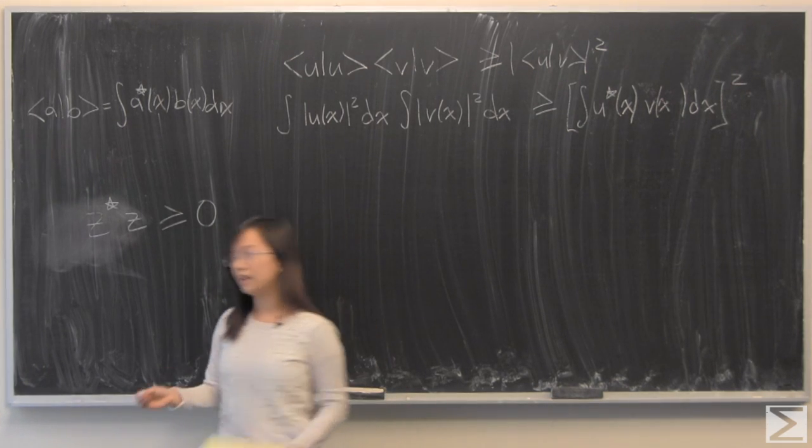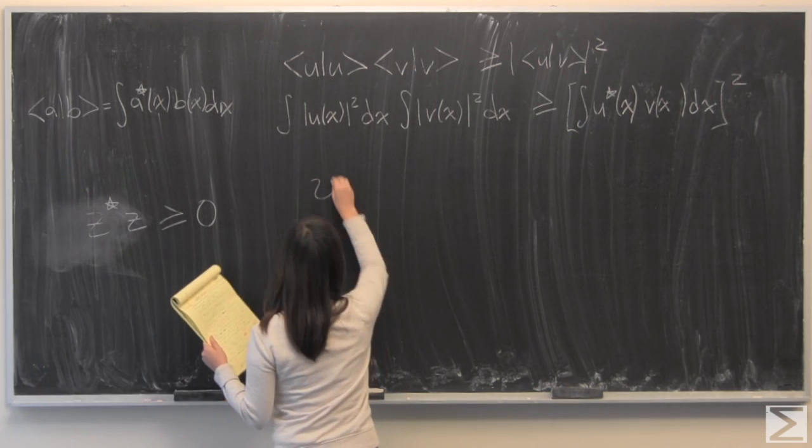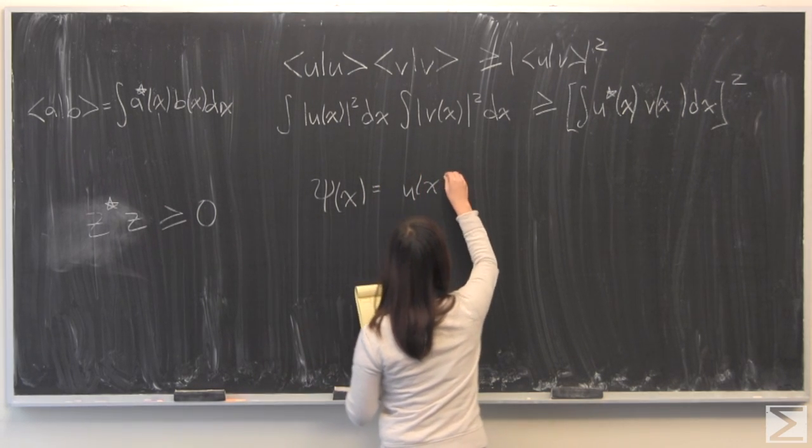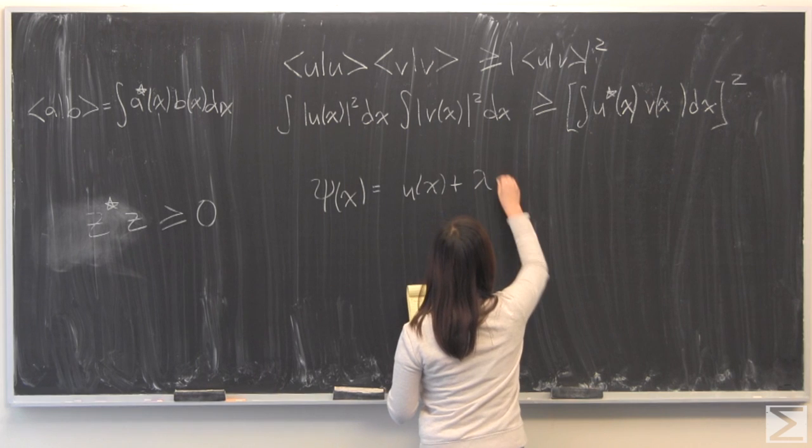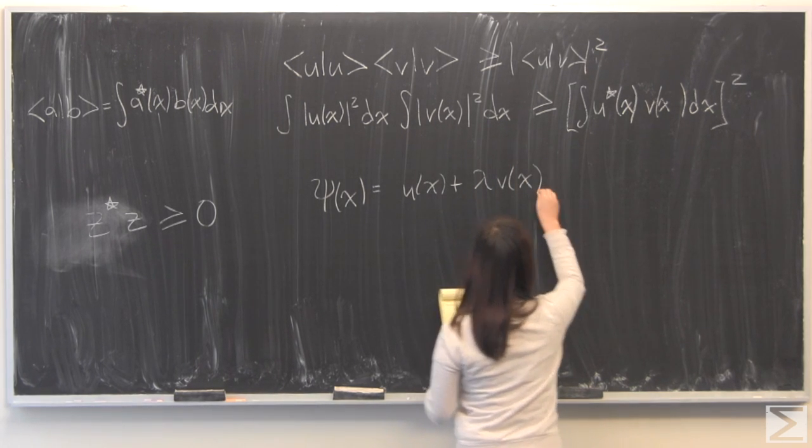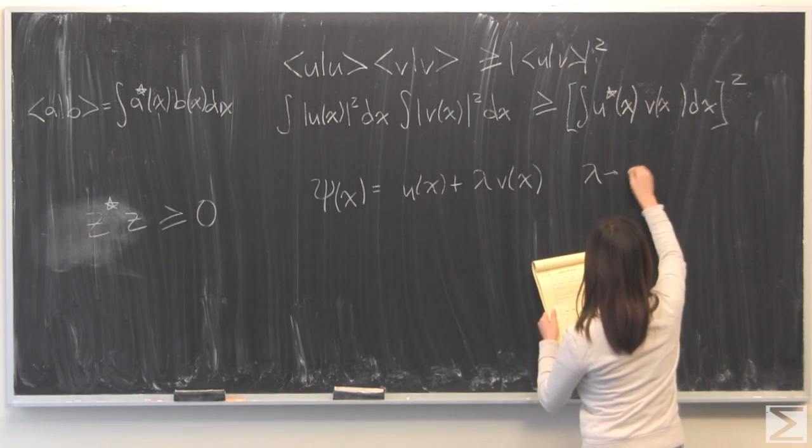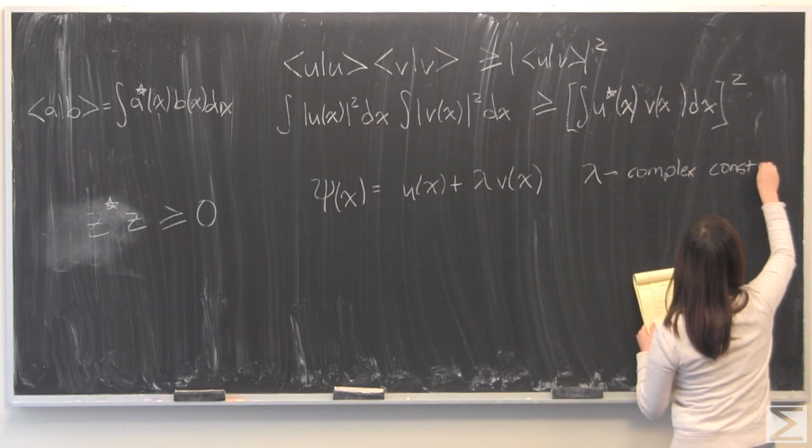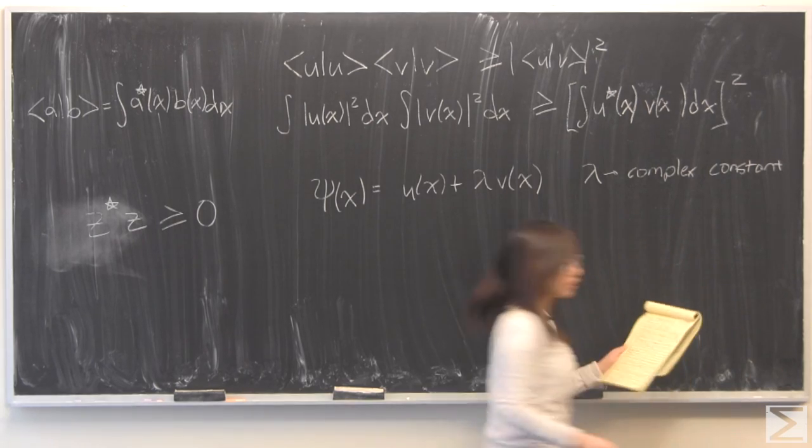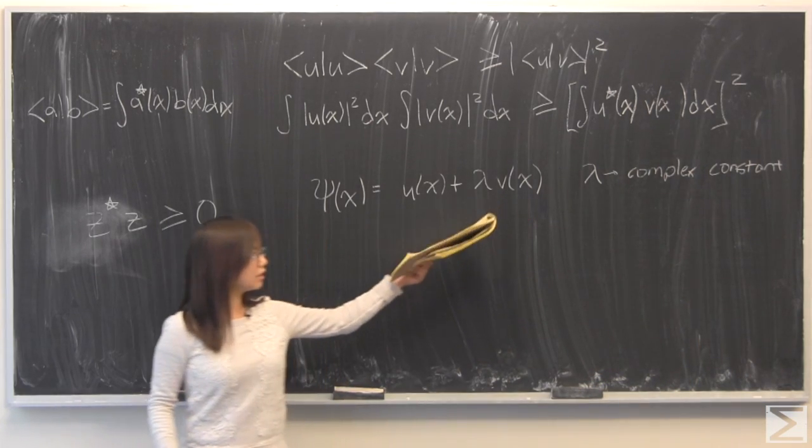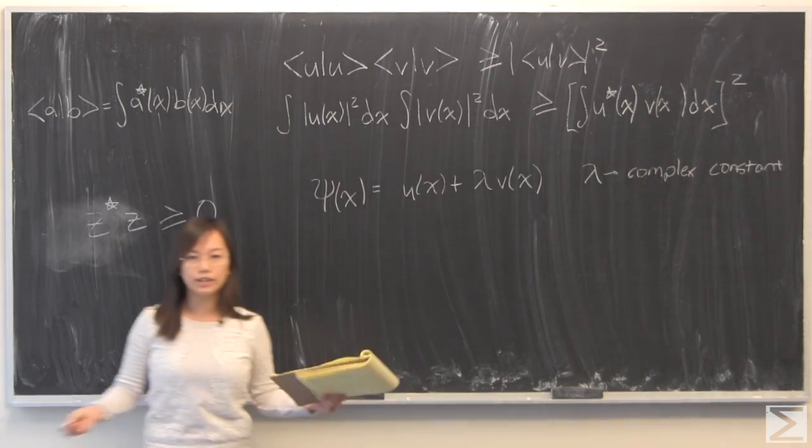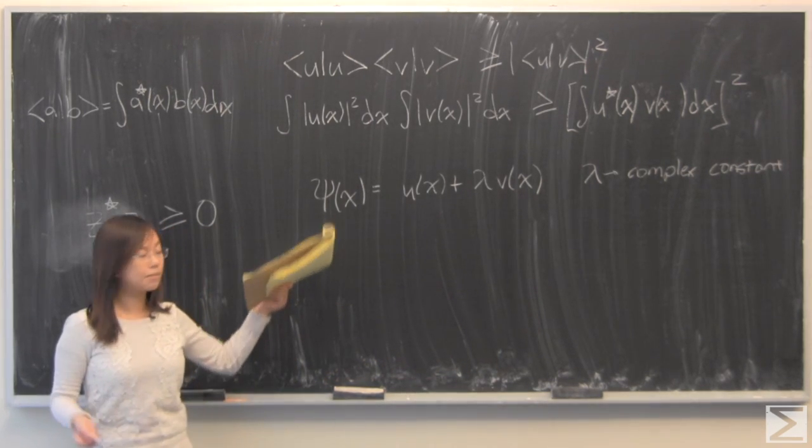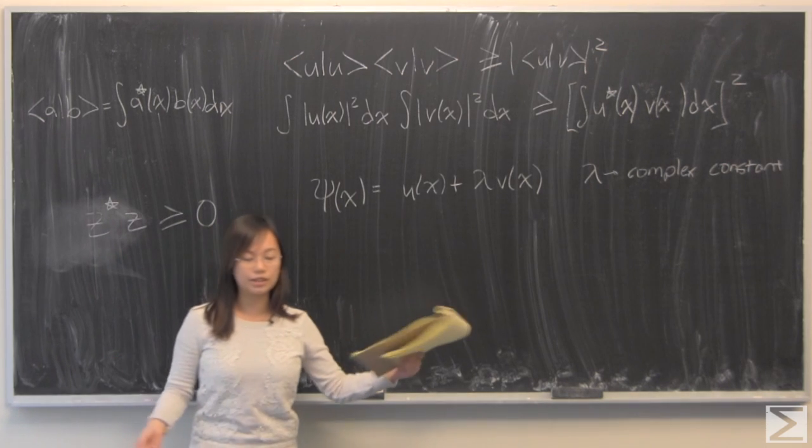I'm going to now define some ψ(X). I'm going to let that be equal to U(X) plus λV(X). Lambda is going to be a complex constant. So for lambda, this complex constant, U and V, if they're both real and integrable, if they're real, then if you multiply a real thing by a complex constant, you should be able to accept that this ψ(X), this should be a complex function.